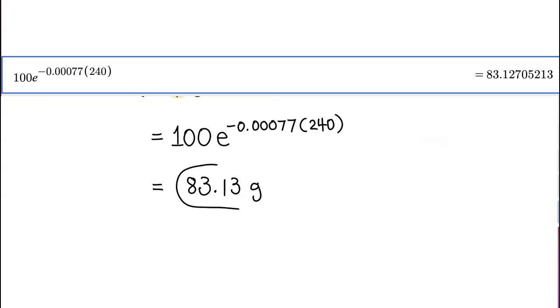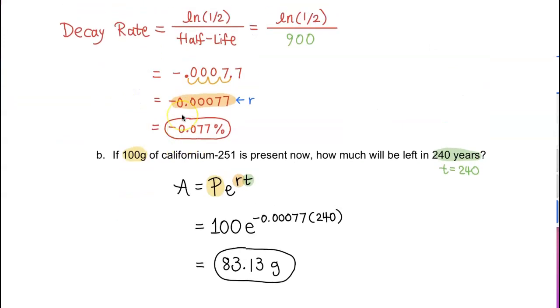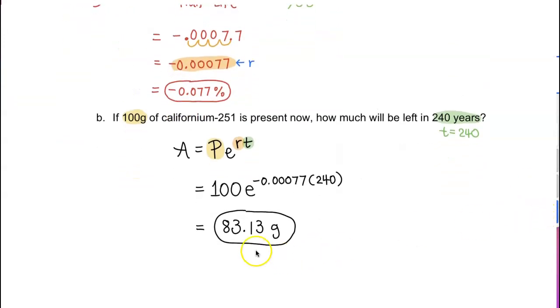And that is how you find decay rate given half-life and the ending amount by writing the equation for the exponentially decaying radioactive substance.